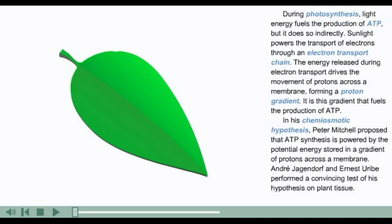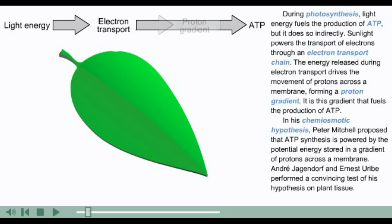During photosynthesis, light energy fuels the production of ATP, but it does so indirectly. Sunlight powers the transport of electrons through an electron transport chain. The energy released during electron transport drives the movement of protons across a membrane, forming a proton gradient. It is this gradient that fuels the production of ATP.